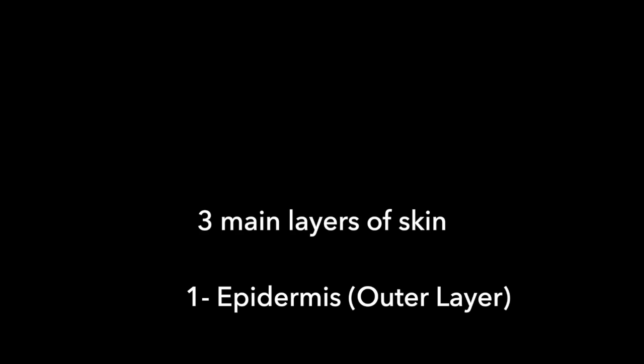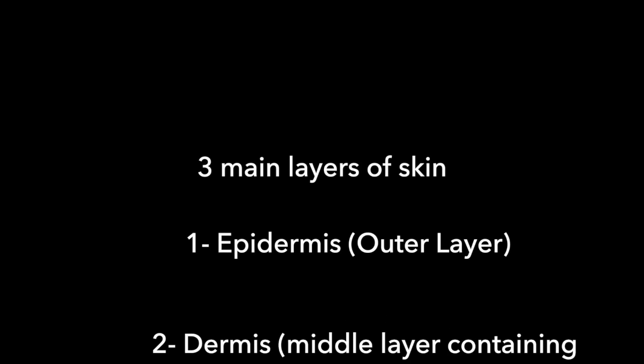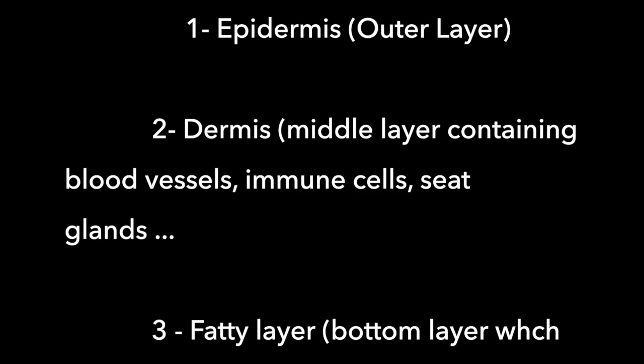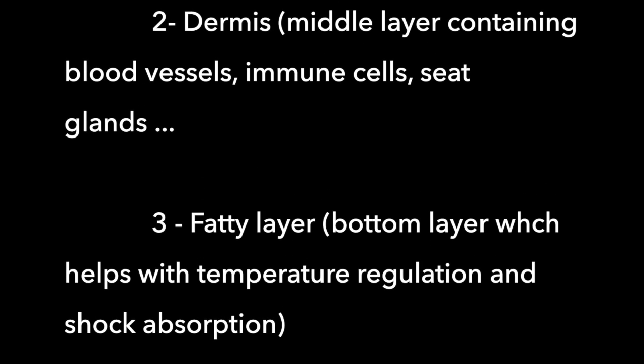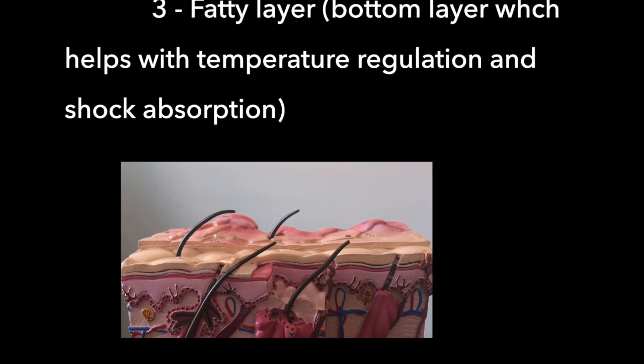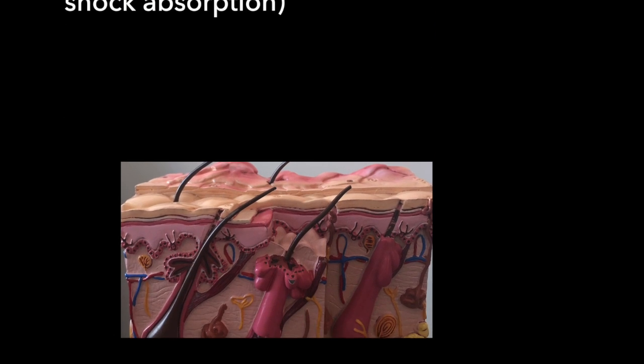Let's go skin deep and understand what's going on underneath those layers. Usually when we talk about skin, we are referring to the outer layer that we all see. The skin itself has three main layers. You have the outer layer, which is your epidermis. Underneath that is the dermis, which contains your blood vessels, your sweat glands, your nerve cells, and some immune cells. And underneath that is your fatty layer, which helps with shock absorption and also regulating your temperature.